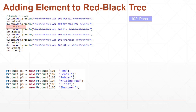Next we add p4 (104 Writing Pad). Since 104 is higher than 102, the compareTo method returns positive, so 104 is placed to the right of 102. Now we add p1 (101 Pen). When 101 Pen is compared with 102 Pencil, it is lesser, so we move towards the left of 102 Pencil. The pen element is placed to the left of the root node.